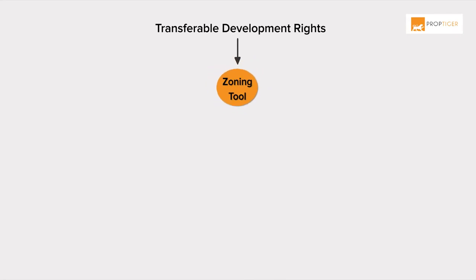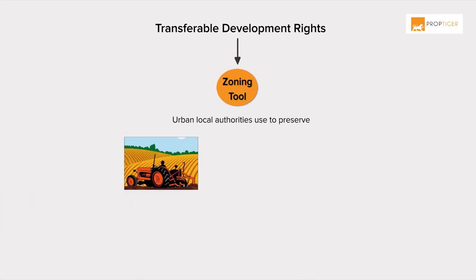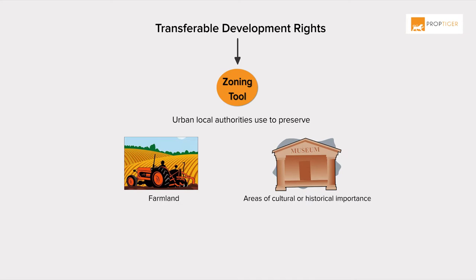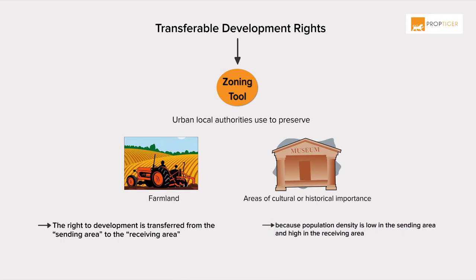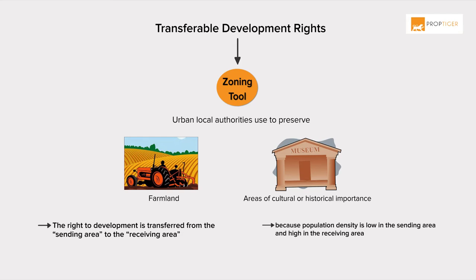Transferable Development Rights, or TDR, is a zoning tool that urban local authorities use to preserve farmland and areas of cultural or historical importance by allowing real estate development in other areas. The right to development is transferred from the sending area to the receiving area because population density is low in the sending area and high in the receiving area.